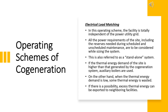When the thermal energy demand of the site is higher than what is generated by the co-generation system, auxiliary boilers are used. On the other hand, when the thermal energy demand is low, some thermal energy is wasted. If there is a possibility, excess thermal energy can be exported to a neighboring facility.